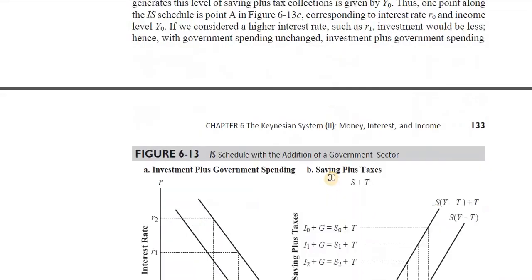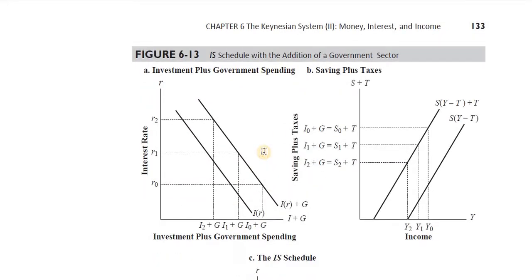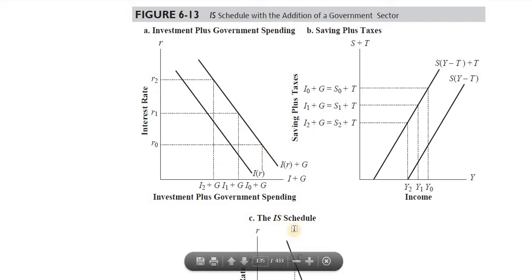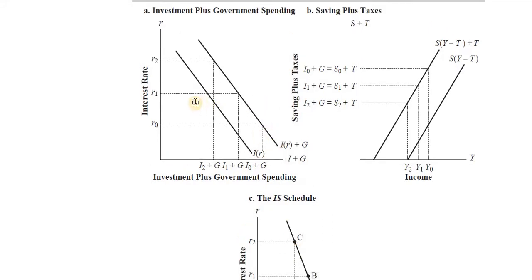Now let's get to the factors that could cause a shift in the IS curve. This diagram may look difficult but it is not. What the author explains is that the moment we incorporate the government sector, the investment curve gets shifted to the right because government expenditure is autonomous to the rate of interest — it does not depend upon the rate of interest. So our key point is: government expenditure is independent of the rate of interest.